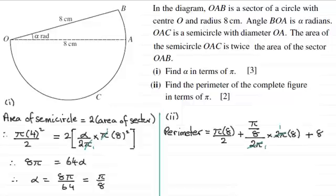So tidying this up, what have we got? Well, for the first term here, this comes to 4π. Then for this term here, the eights cancel, so you're just left with π. And then you've got plus eight. So we end up with a perimeter then in terms of π of 5π plus eight. And that would be measured in centimeters.